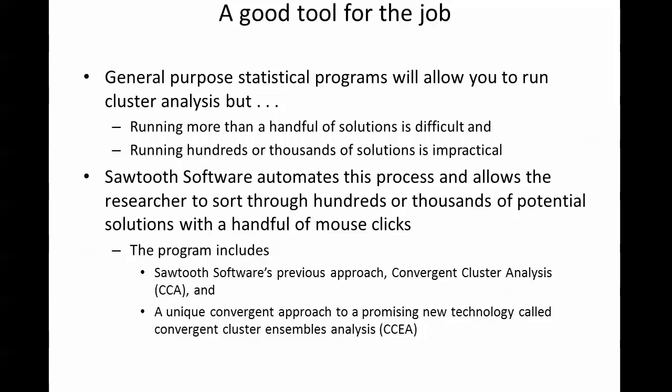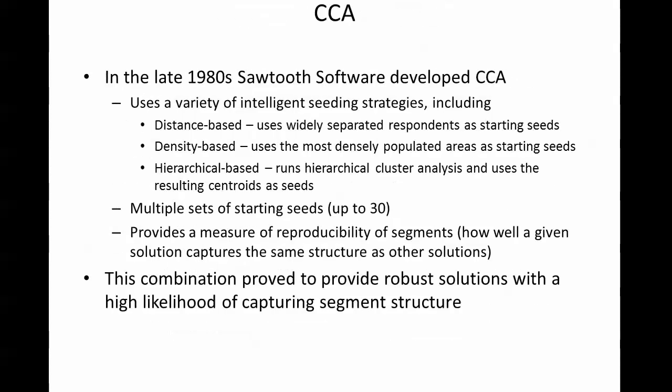The program includes two separate programs: one for Sawtooth Software's Convergent Cluster Analysis, a method that came out in the late 1980s, and one for a newer program called Convergent Cluster Ensembles Analysis using a new clustering technology. First, let's talk about CCA, or Convergent Cluster Analysis. It came out in the late 1980s, at which time I thought it was just the neatest product out there, having previously tried to do cluster analysis with general purpose statistical programs.